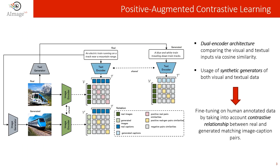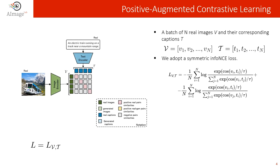Our architecture is a dual encoder that compares the visual and textual input via cosine similarity. Additionally, we incorporate synthetic generators for both visual and textual data. During training, our model incorporates regularization by considering contrastive relationships between real and generated image-caption pairs. Given a batch of n real images and their corresponding captions, we obtain the classical CLIP loss term that maximizes the cosine similarity between the n matching pairs and minimizes all the other non-matching pairs.